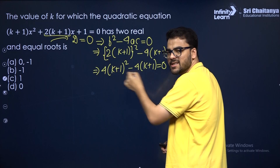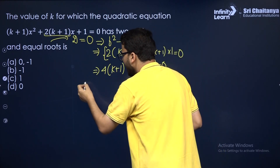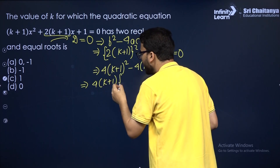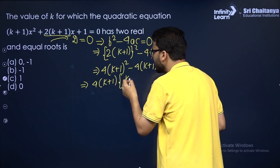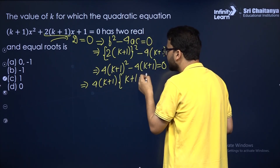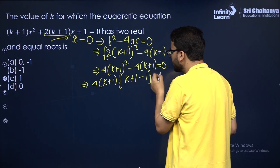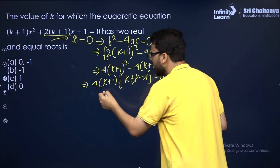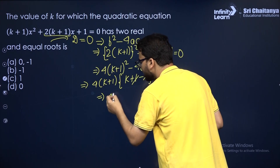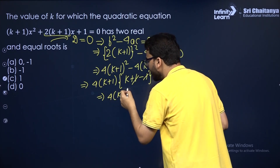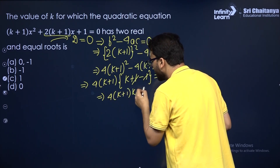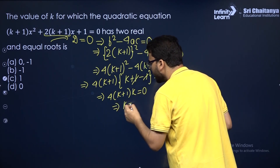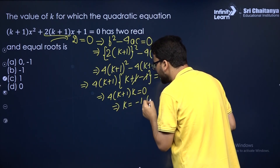Out of the whole left-hand side expression, take 4(K + 1) as common. We're left with (K + 1 − 1) = 0, which gives 4(K + 1)(K) = 0. So the two values of K are minus 1 and 0.